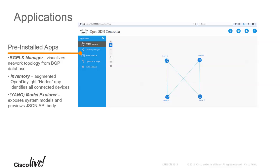The Yang Model Explorer is very cool — it allows you to pull different information and visualize it, but you can also make configuration changes and push those out using Yang models from the OpenFlow Manager. The OpenFlow Manager is a very robust interface where you can visually see OpenFlow switches and the hosts connected to them. You can create flows, delete flows — a tremendous amount of capabilities with OpenFlow.